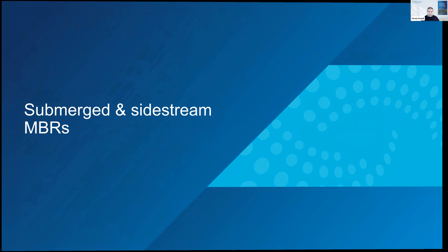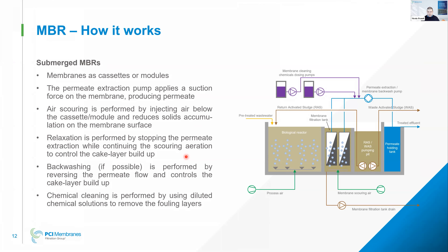There are two types of MBRs. Submerged MBRs have modules or cassettes that are immersed in the activated sludge — either directly in the biological reactor for small plants, or in a dedicated tank for larger ones. You apply a little vacuum with the permeate extraction pump on the membrane to suck out the water from the mixed liquid, which goes to the permeate holding tank for discharge or reuse. To keep the membrane clean, we use air scouring — injecting air under the membrane modules with dedicated air diffusers to keep the membrane clean and concentrate the mixed liquid away from the membrane surface.